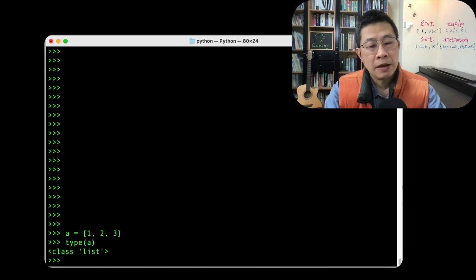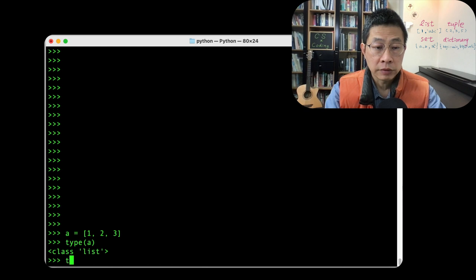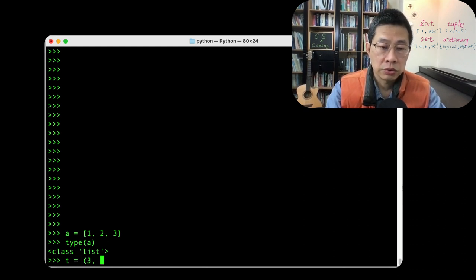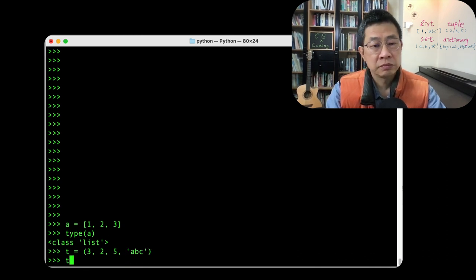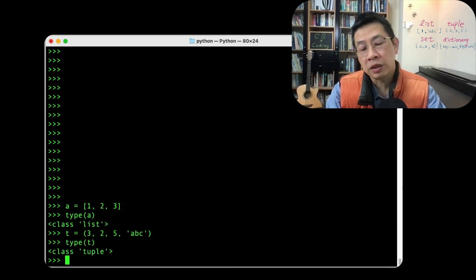And what about tuple? T, parenthesis, three, one, two, five. Any number or any character? Maybe. T, tuple.